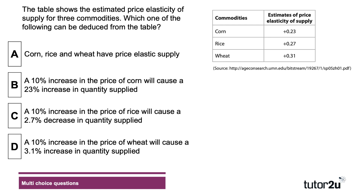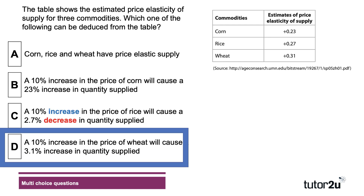The correct answer is D. It's not C — quite a few people chose C. Option C says a 10% increase in the price of rice will cause a 2.7% decrease in quantities supplied. The coefficient of price elasticity of supply is 0.27.